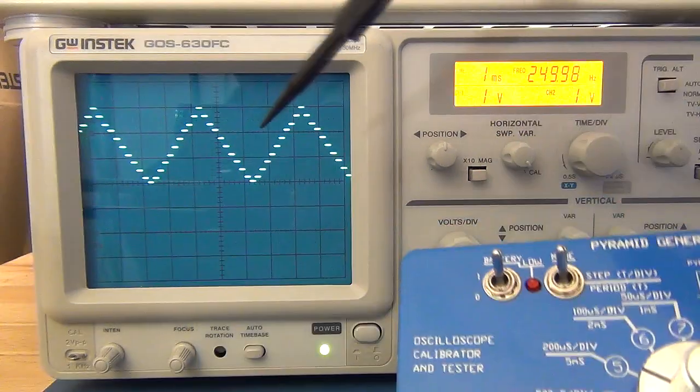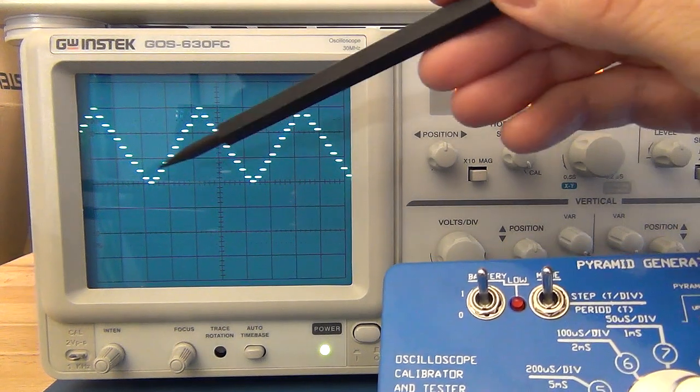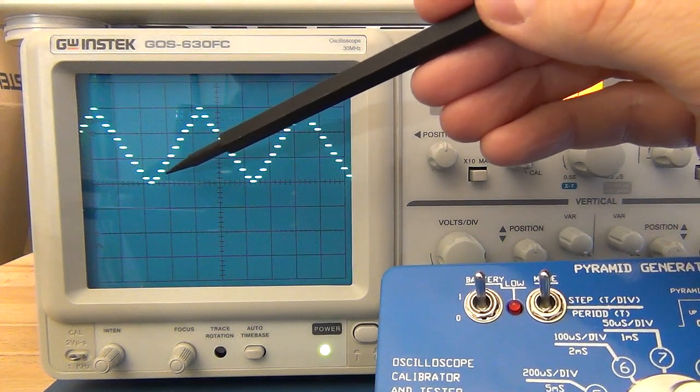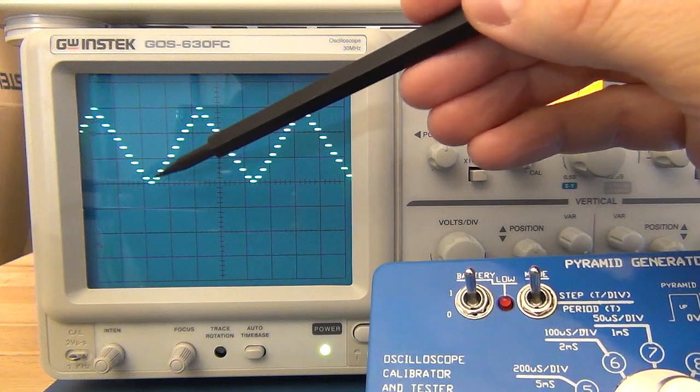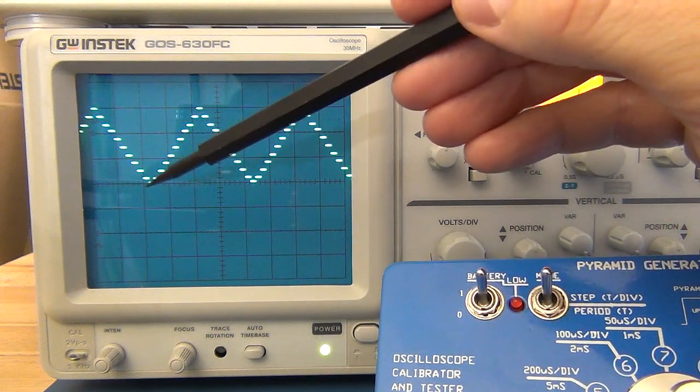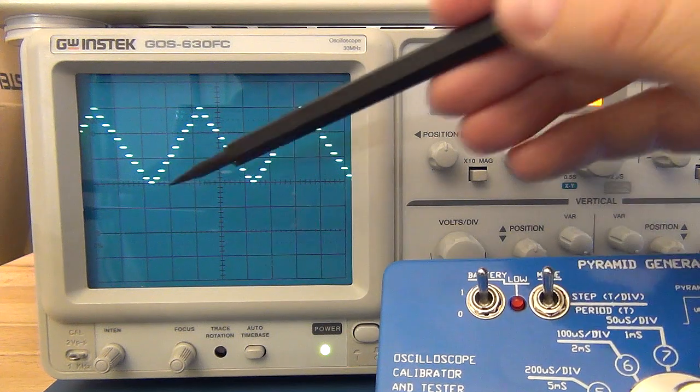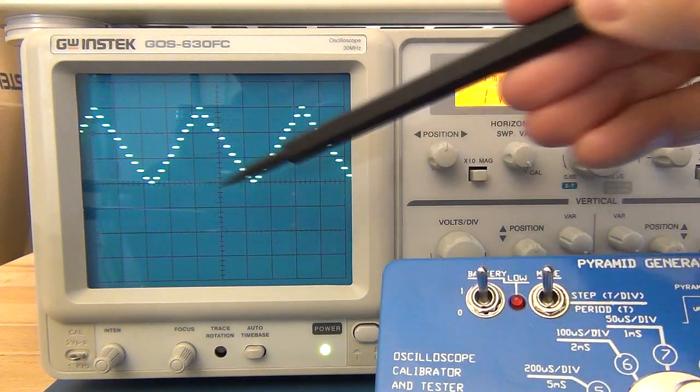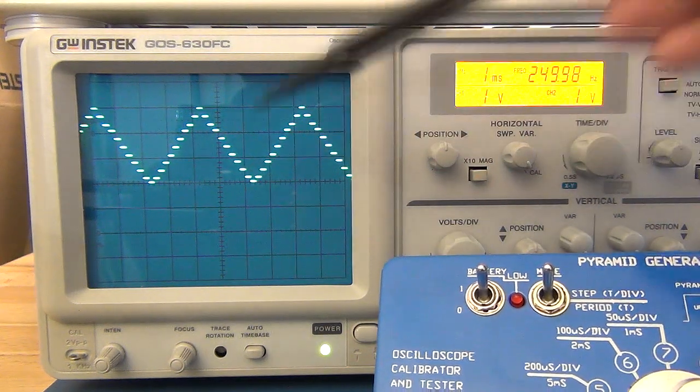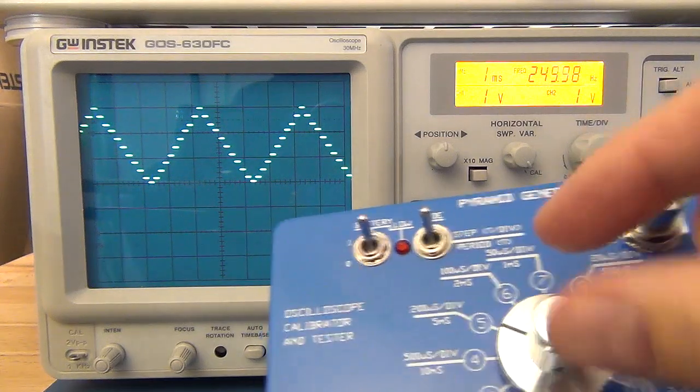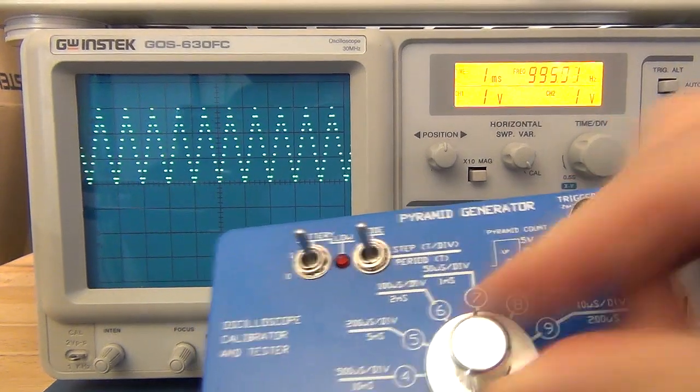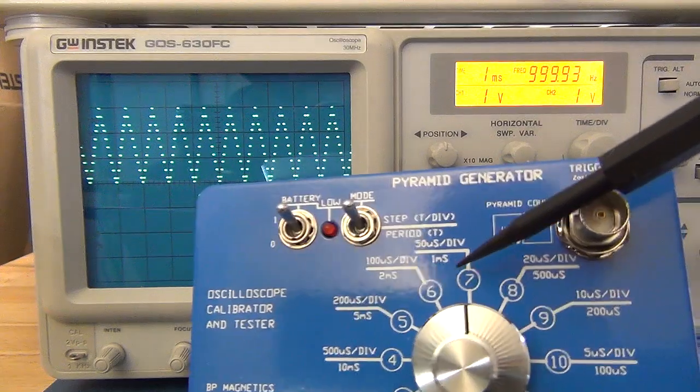Next let's have a look at the period. Now to test the period, what we're looking for as opposed to just setting and looking at an individual division, we can check the period that the triangle signal is being completed. The start of the period is there and it finishes here. So we can set it to 1 millisecond.